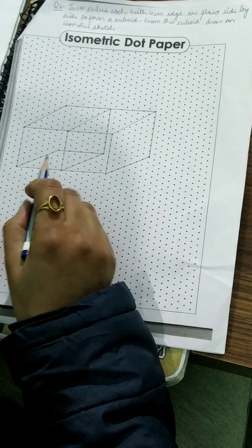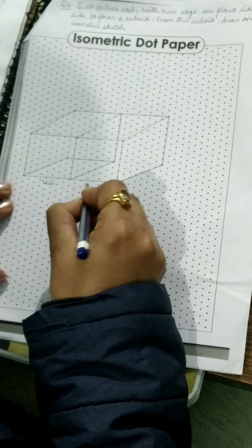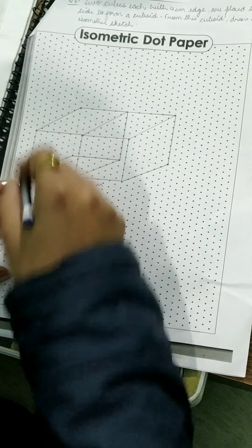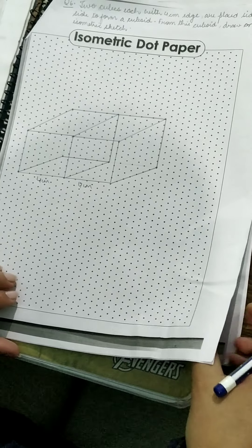Now children these are the 2 cubes and when we have joined them it will form a cuboid. So like this you have to form a structure in the 6th question.